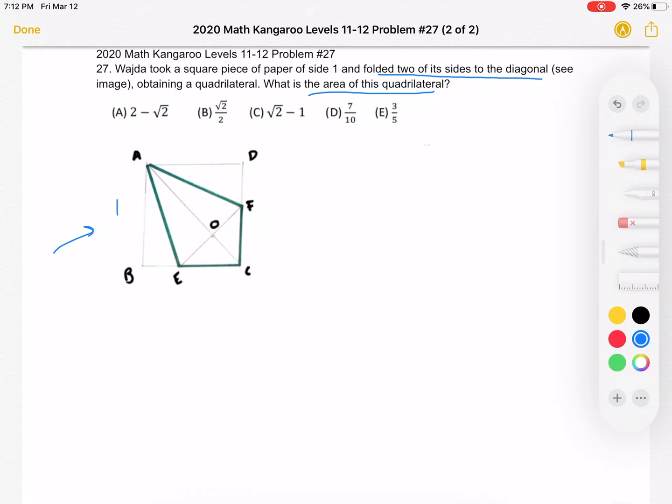Because angle BAC is being bisected, angle BAE is equal to angle EAC. Because, again, as we described earlier, when Wajda folds the sides, the triangle is basically being reflected. Triangle BAE is being reflected over line AE. And in the process, all the angles will remain the same.